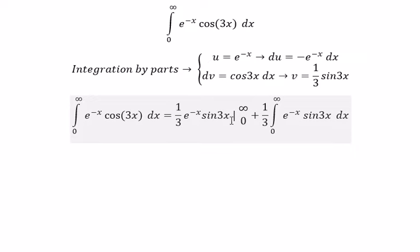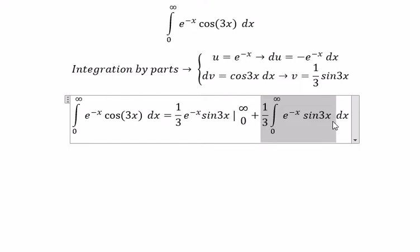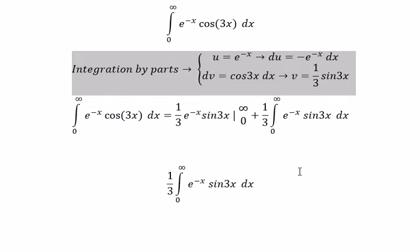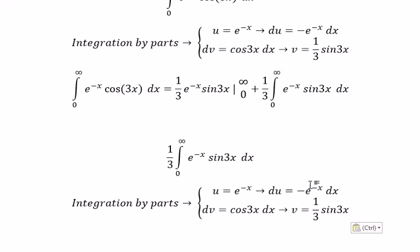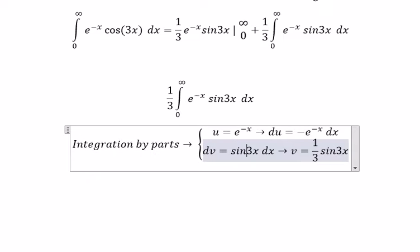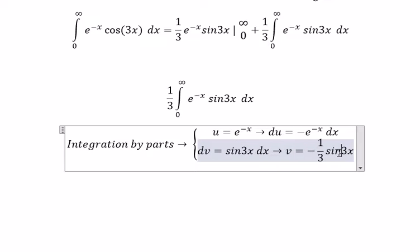We put in zero and positive infinity, we get zero here, so this term is left. Now we use the same technique, but we change sine 3x into negative one-third cosine 3x.